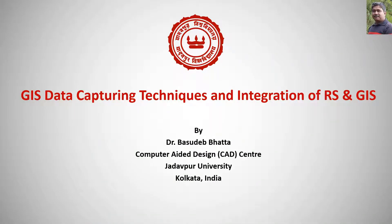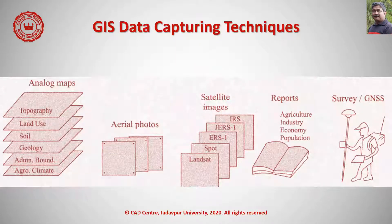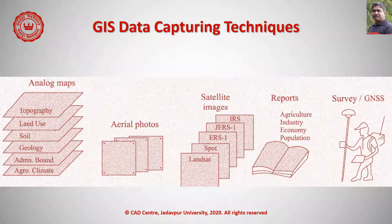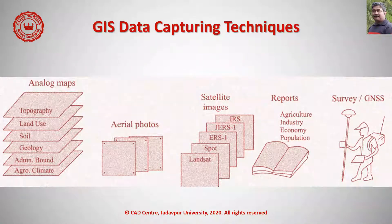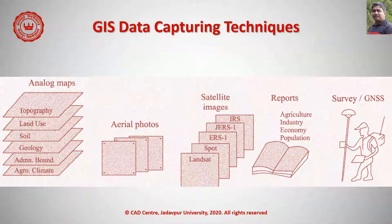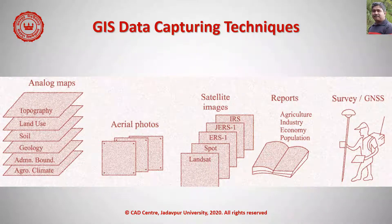Good evening. I'm going to discuss GIS data capturing techniques and the integration of remote sensing and GIS. The power of GIS comes from the ability to relate different information in a spatial context and to reach a conclusion about relationships. Most of the information we have about our world contains a location reference, placing that information at some point on the globe. A GIS can use information from many different sources in many different forms to help with various analyses.